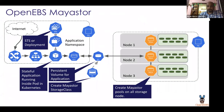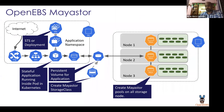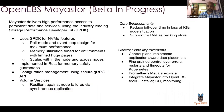For Mayastor, we are still in beta and actively developing based on community feedback. A key architectural difference from cStor is that there is no separate target pod — the target is embedded directly into the Mayastor engine itself, which handles replication to other nodes where the Mayastor pool is running. We're hoping to complete the beta very soon.